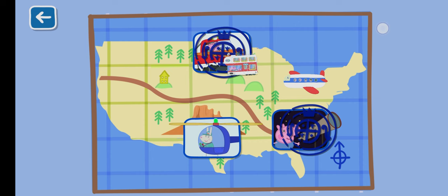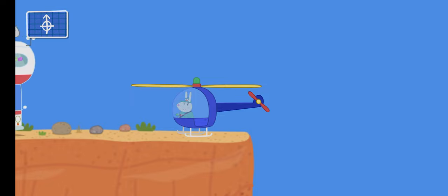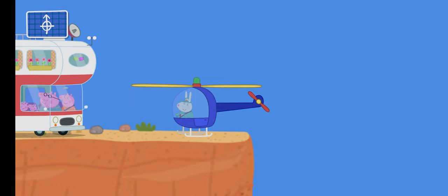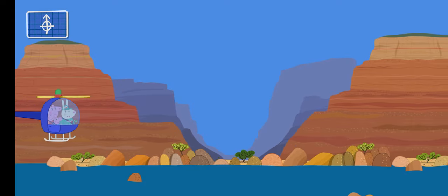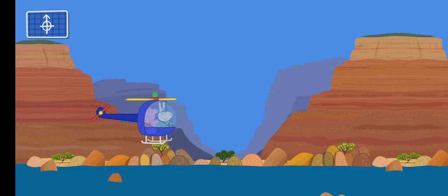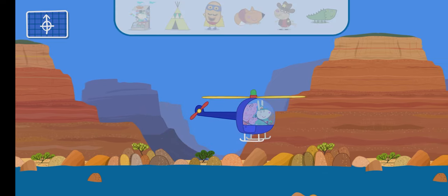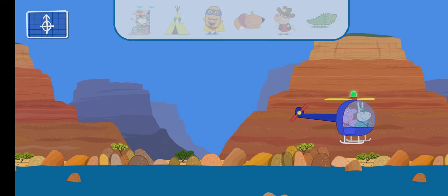Hole! Daddy Pig has driven everyone to the Grand Canyon. It is a big hole that contains a giant desert with rocks, and it looks like the moon. Miss Rabbit is going to take Peppa. There are lots of interesting things in the Grand Canyon. Can you help Miss Rabbit find them in the helicopter?